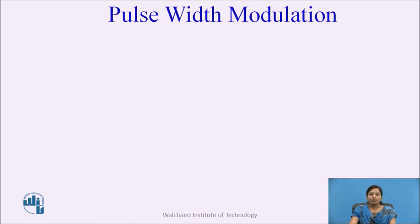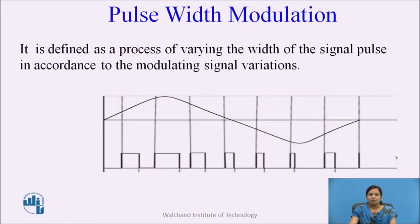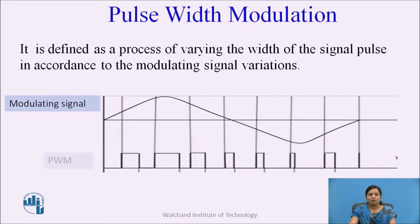Pulse width modulation is defined as the process of varying the width of a signal pulse in accordance with the modulating signal variations. In PWM, the width of the train of pulses changes according to the modulating signal, while the amplitude and position of this train of pulses remains constant — only the width changes.